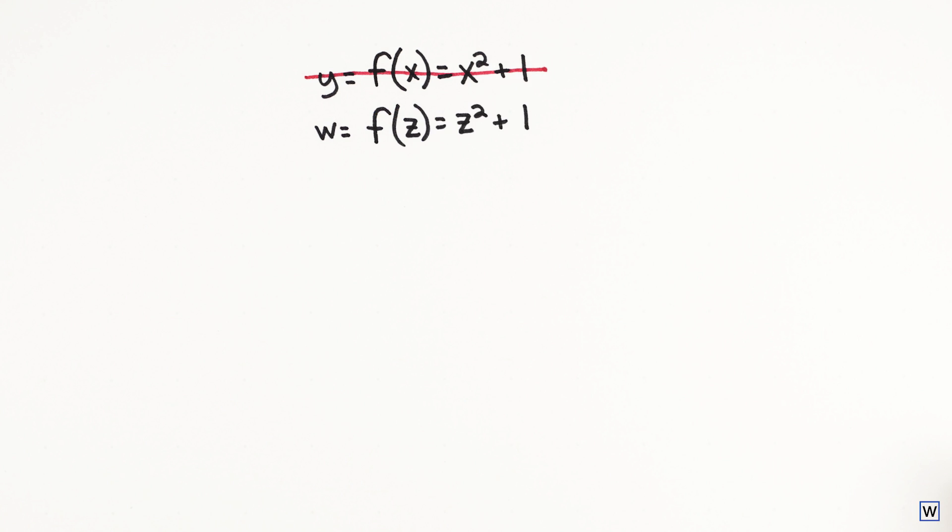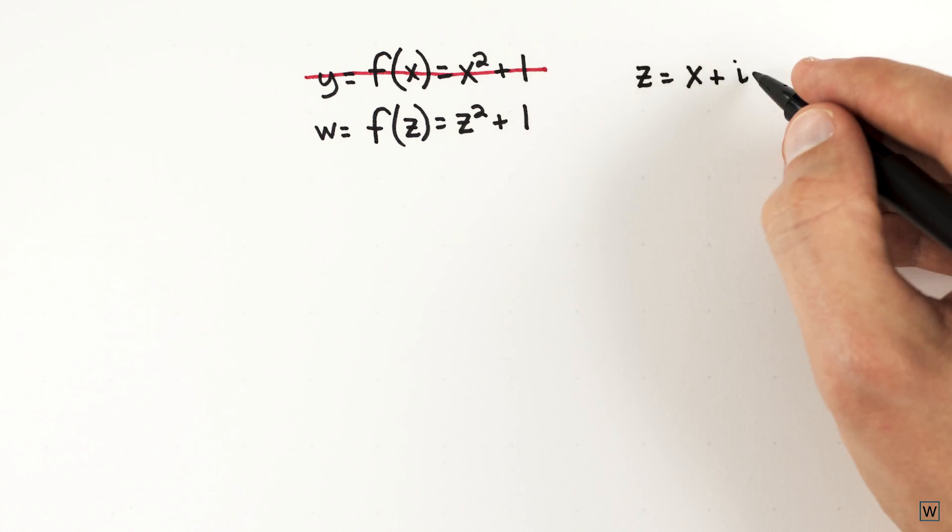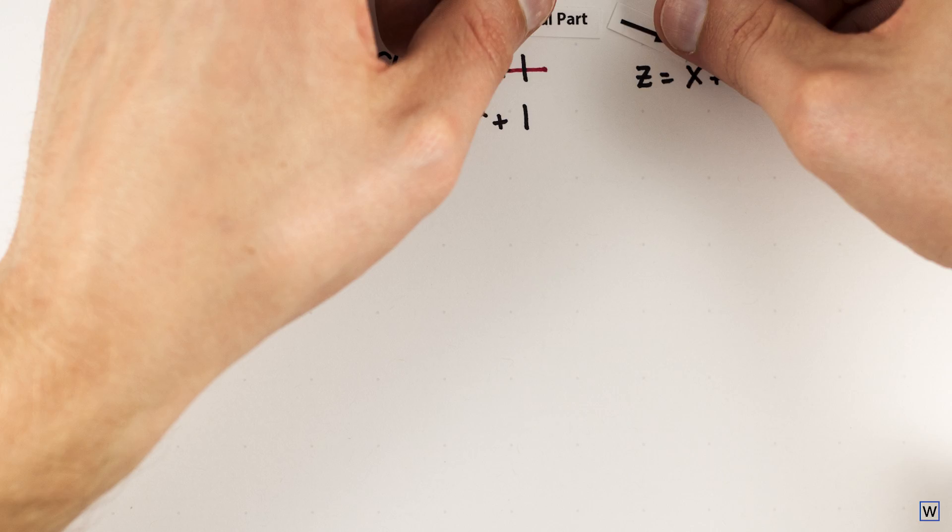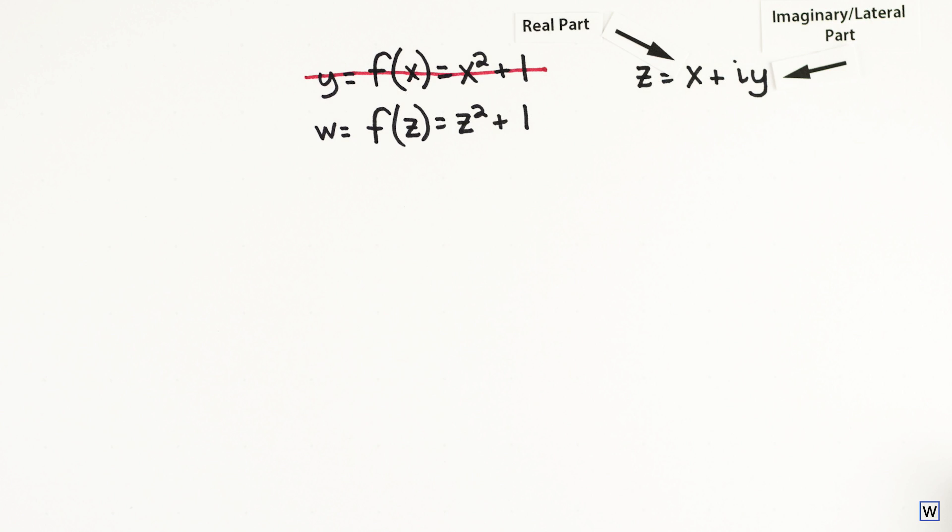Since z and w each have a real and imaginary part, let's go one step further and give these parts names. We'll let z equal x plus iy, so x represents the real part of z, and y represents the imaginary part. We'll also let w equal u plus iv.